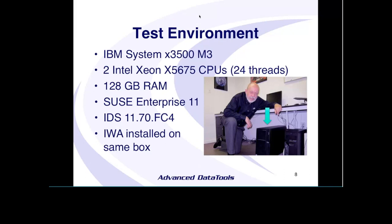Now this is the machine we're going to show you — that little box there. It's not a big machine. I bought it in December; it cost somewhere between $15,000 and $20,000. It's an IBM X3500 with two Xeon chips and 128 gigs of RAM. We're running SUSE Linux. It's got Informix 11.7 FC4, and we're running the accelerator on the same box.